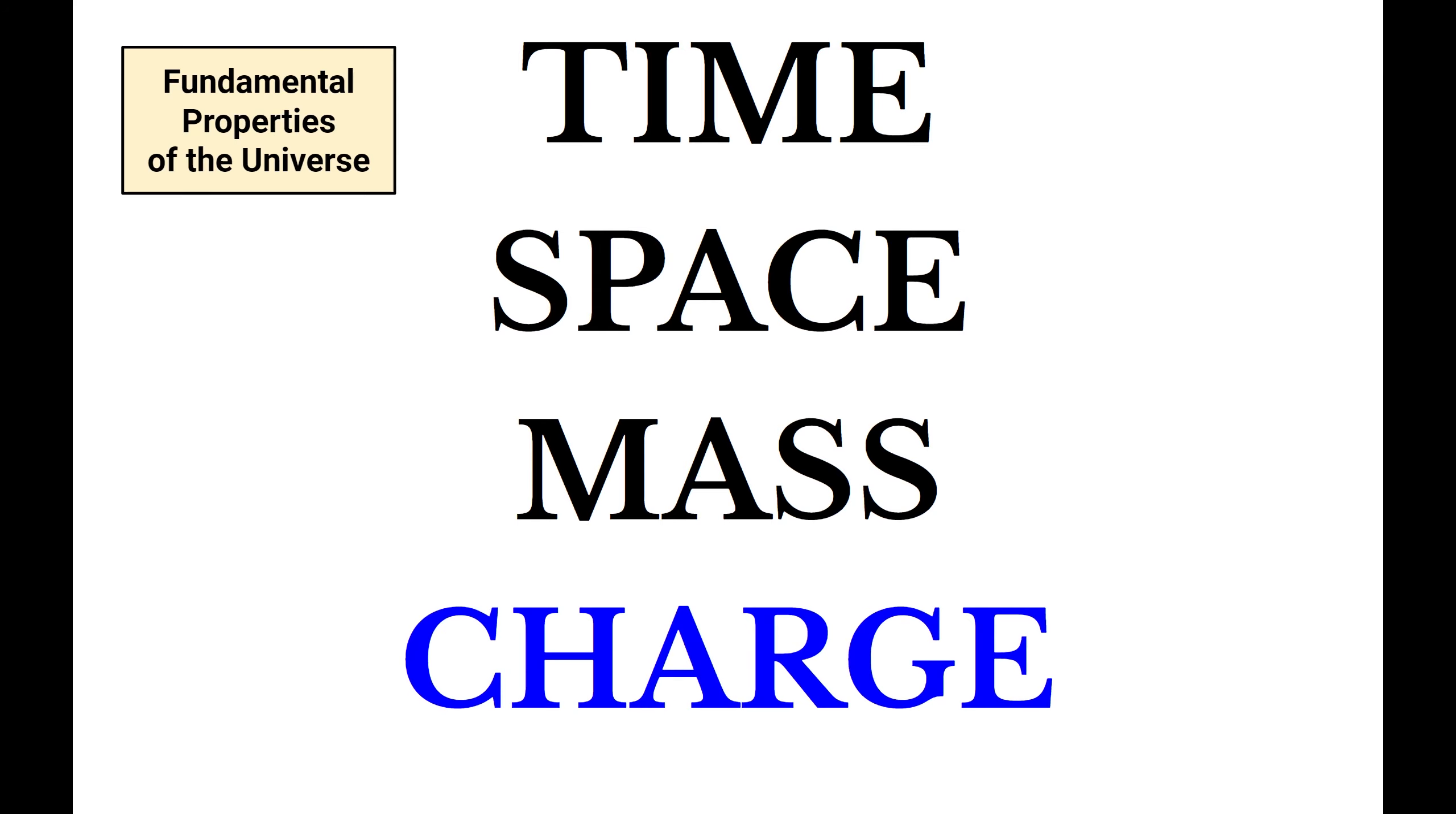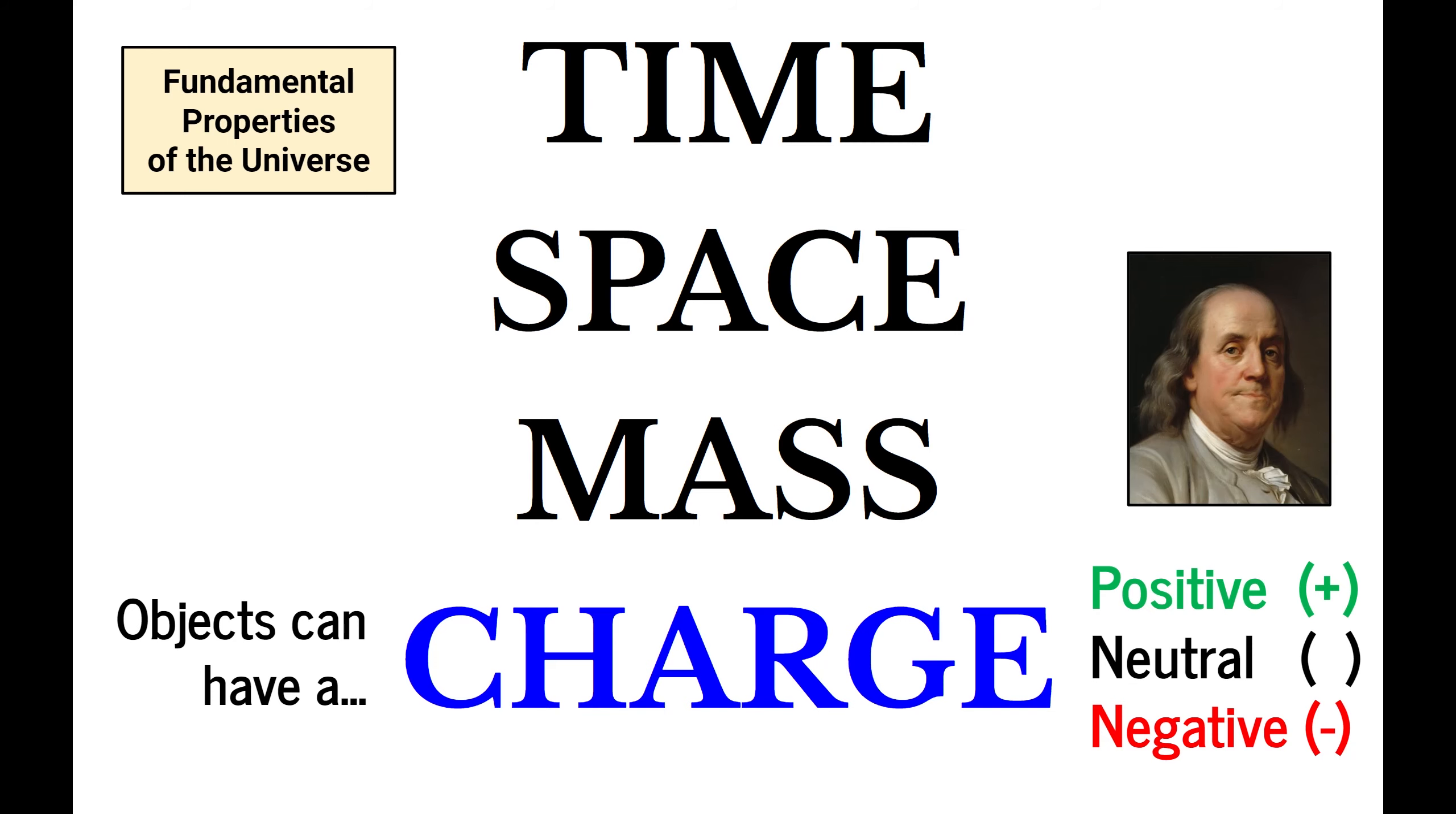Now, just like mass, if an object possesses this thing called charge, then it can generate forces with other objects that also have charge. There are three flavors of charge: positive, negative, and then technically the third is neutral, which means you have no charge at all. Now, we could have used all kinds of words to describe these types of charge. Instead of positive and negative, we could have said up and down or left and right.